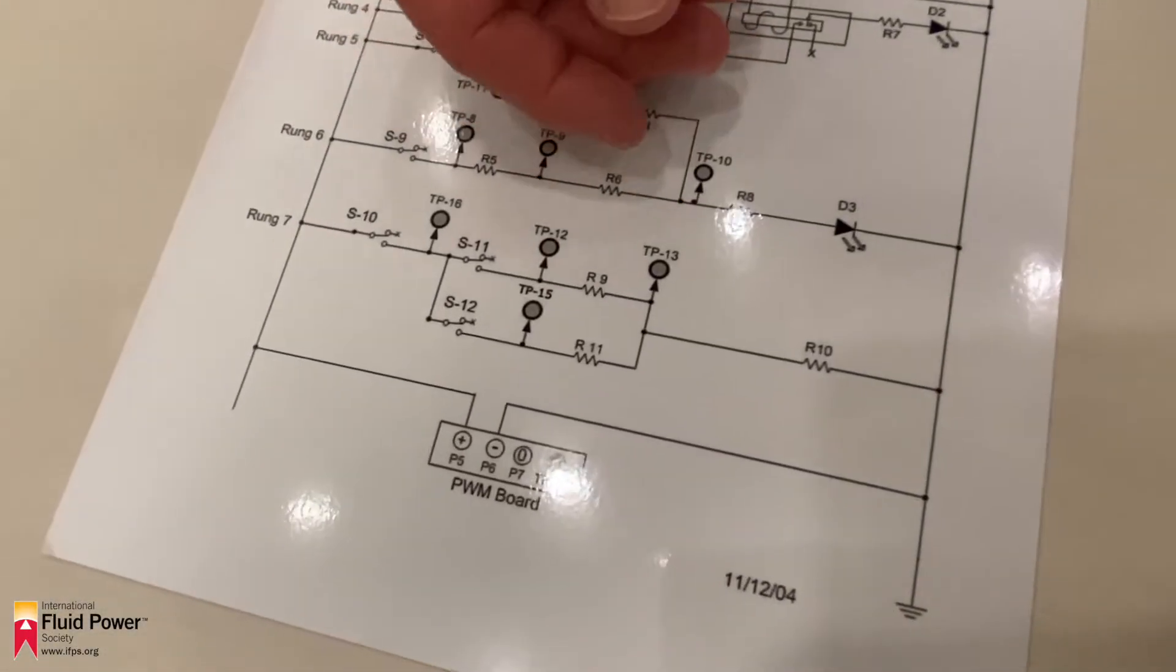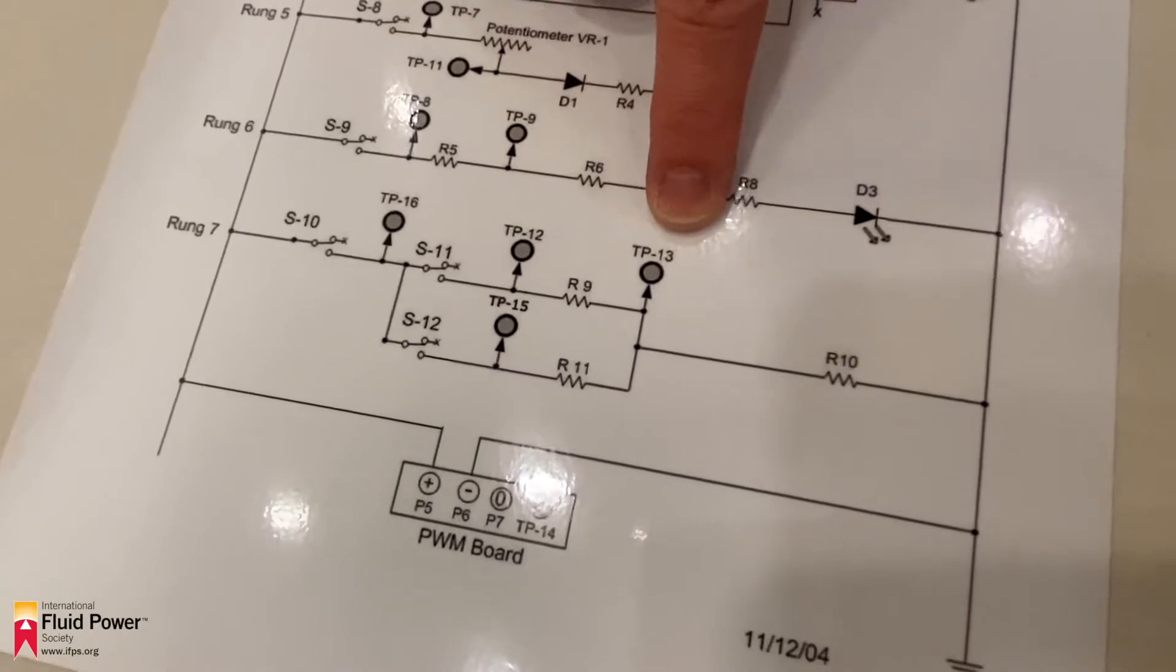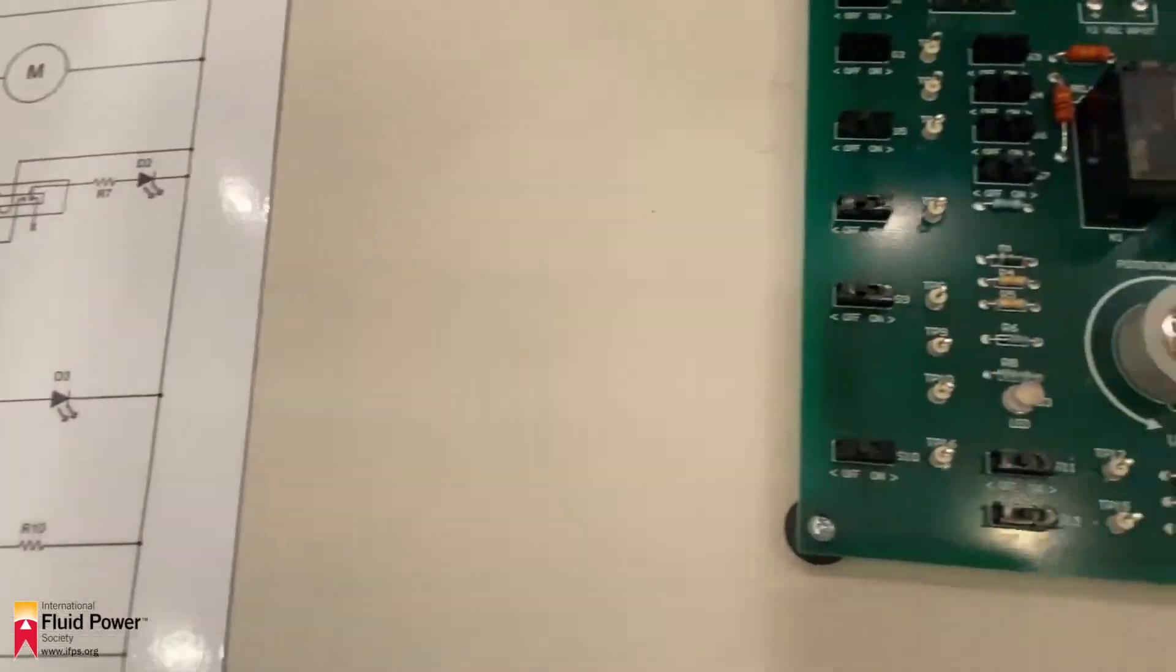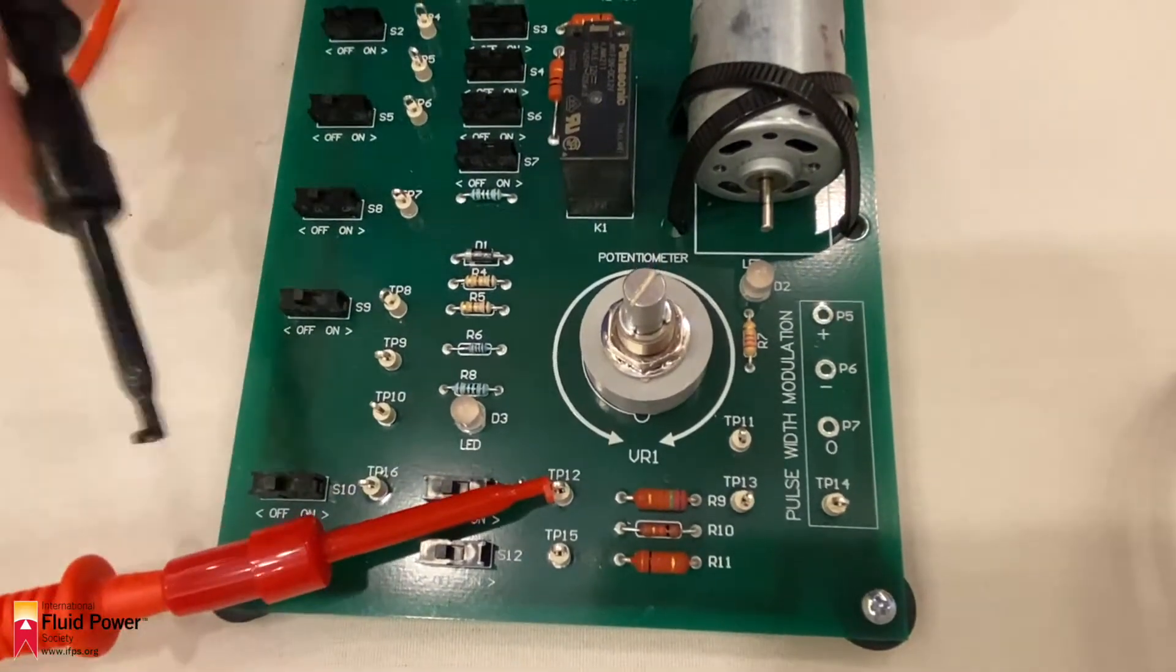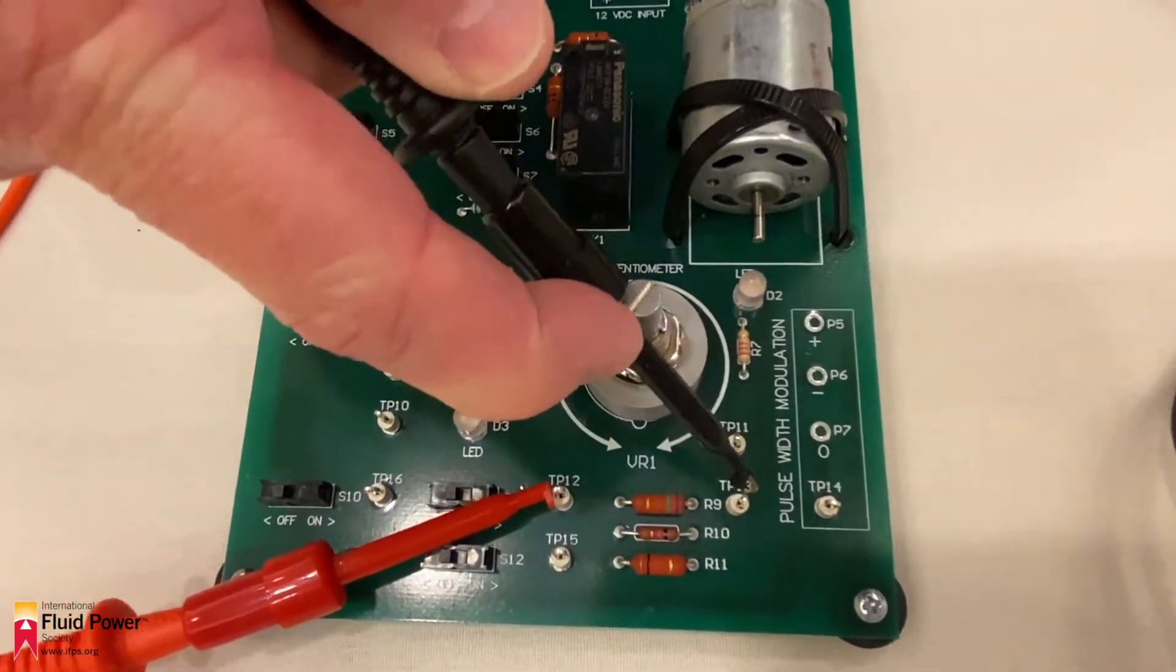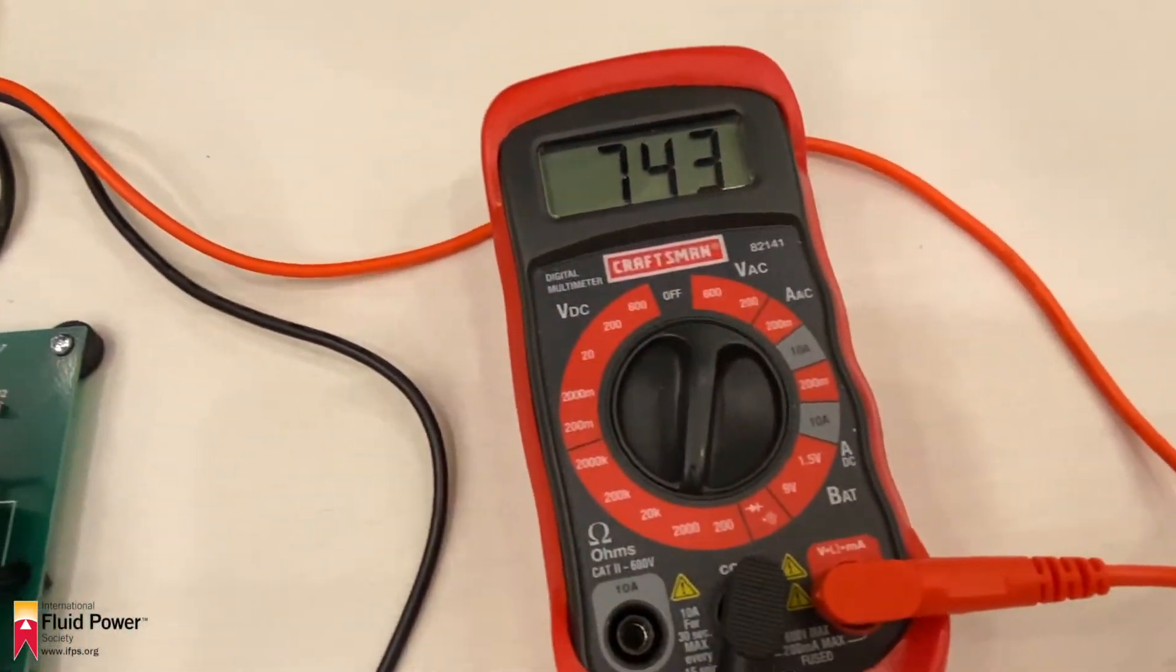Checking the schematic, the test points on either side of R9 are TP12 and TP13. Applying the red lead to TP12 and the black lead to TP13 reads approximately 745 ohms.